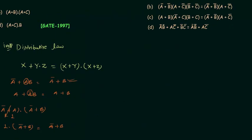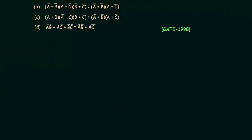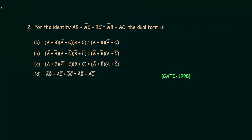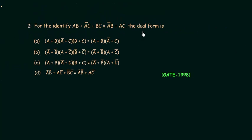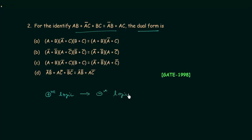Now we will move to the second problem in this lecture. It appeared in the GATE 1998 exam. In this problem we have to find the dual form for the given function. As I mentioned in the dual form lecture, dual form is used to convert positive logic to negative logic and negative logic to positive logic.